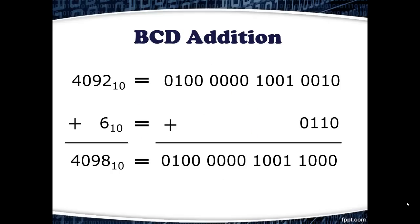When it comes to addition, adding two Binary Coded Decimal numbers uses the normal rules of binary arithmetic. In this example, we're adding 4,092 plus 6. In base 10, that gives us 4,098. Using the rules of binary arithmetic, with the BCD values for 4,092 and 6, we end up with a 16-bit binary value.